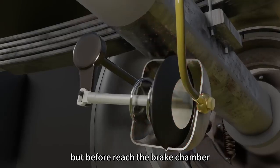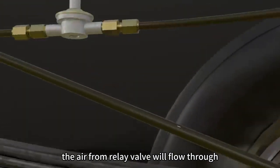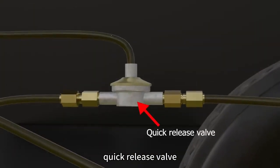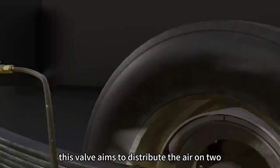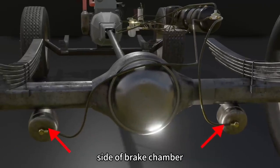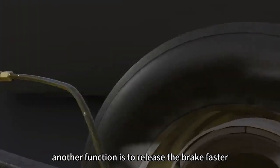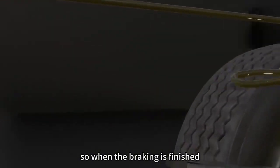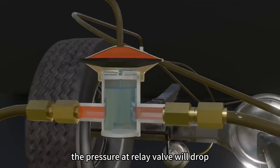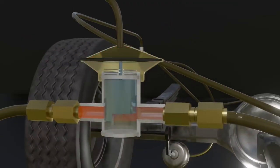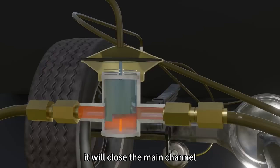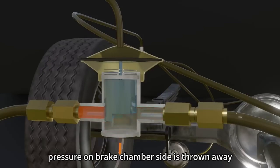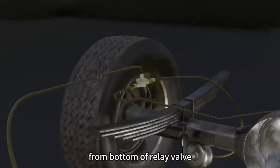But before reaching the brake chamber, the air from relay valve will flow through quick-release valve. This valve aims to distribute the air on two sides of brake chamber. Another function is to release the brake faster. When the braking is finished, the pressure at relay valve will drop. It will close the main channel so the air pressure on brake chamber side is thrown away from bottom of relay valve.